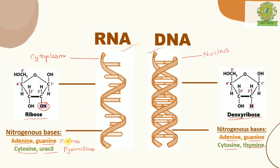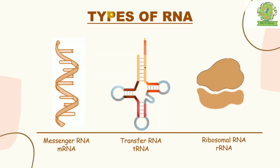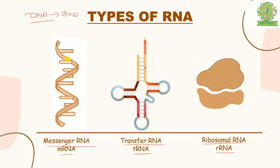There are three types of RNA. Imagine that DNA is the boss — it's always present inside the nucleus and controls everything that happens inside the cell, but it never comes out. So DNA produces three assistants: messenger RNA (mRNA), transfer RNA (tRNA), and ribosomal RNA (rRNA). These three types of RNA act as assistants for DNA.